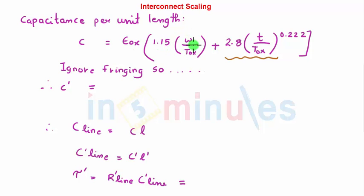So capacitance per unit length C is given by εox × [1.15 × (W/Tox) + 2.8 × (T/Tox)^0.22]. This is the formula. Now we are going to ignore the fringing capacitance here and I will assume that only this term dominates.